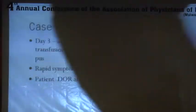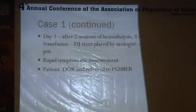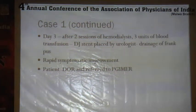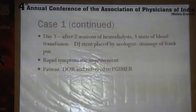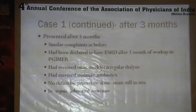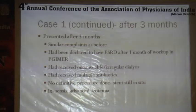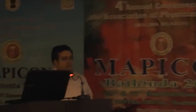After three days with two sessions of dialysis and three units of blood transfusion she has marked symptomatic improvement. A DJ stent is placed by our urologist, which shows drainage of frank pus. She then requires referral as the hospital is expensive. She goes to PGI and I see her again after three months — the same scenario. At PGI Chandigarh she had been declared to have end-stage renal disease after one month of workup.